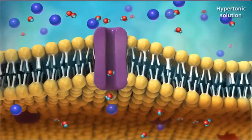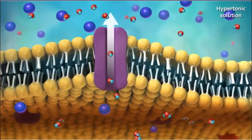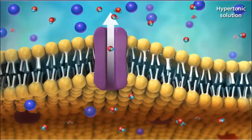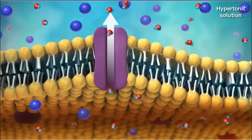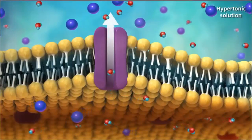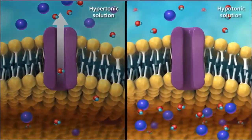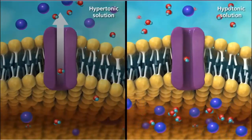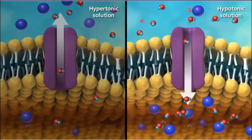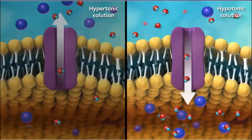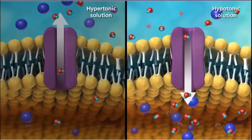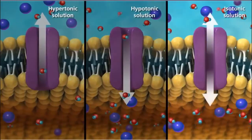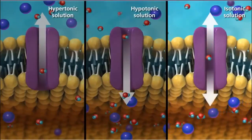A cell in a hypertonic environment will have water move from the inside of the cell toward the higher concentration of solutes in the solution outside the cell. In a hypotonic solution, the concentration of solutes is higher inside the cell than the outside environment, so water will diffuse into the cell. When the solutions on either side of the membrane reach equilibrium, they are referred to as isotonic.